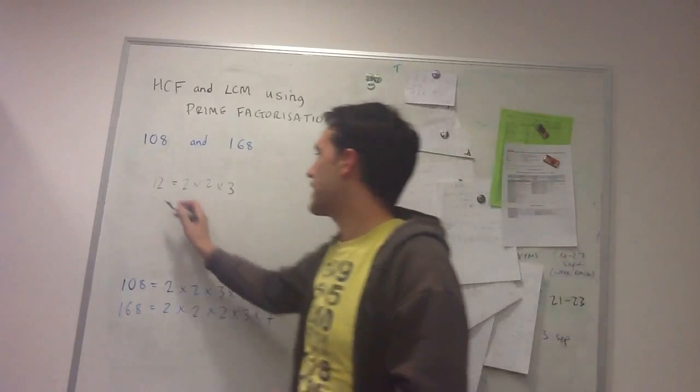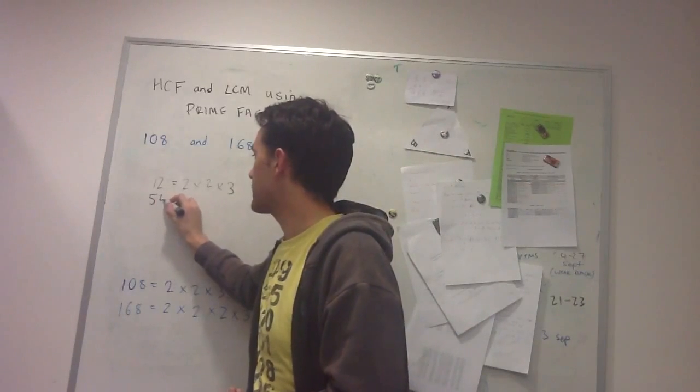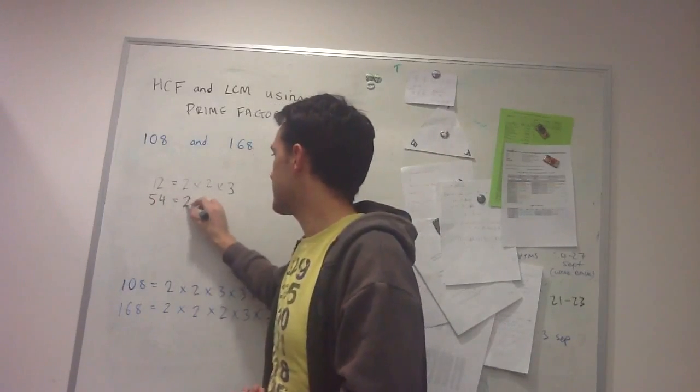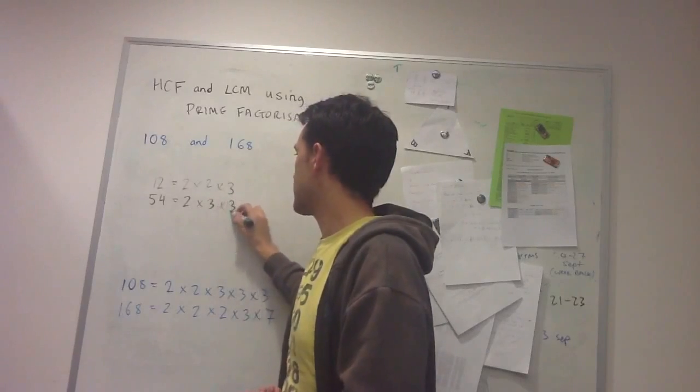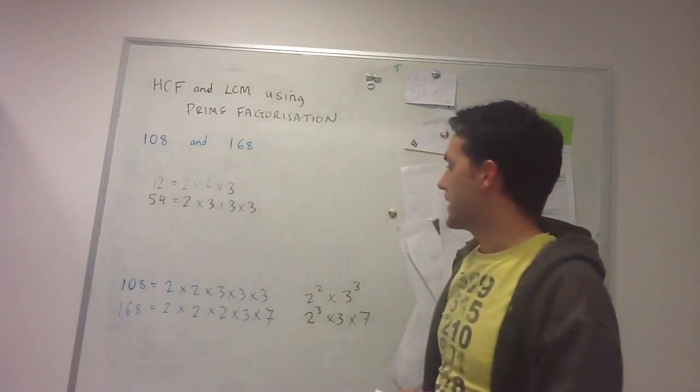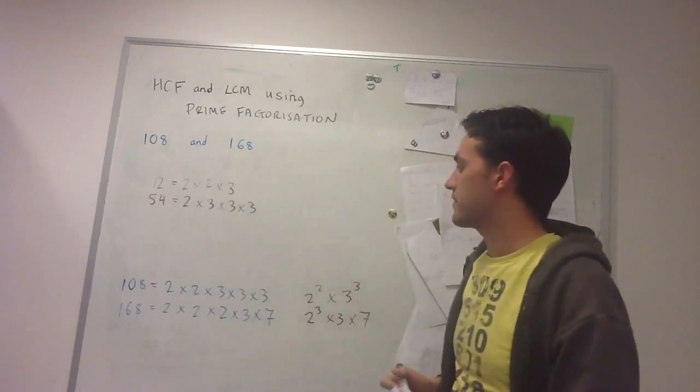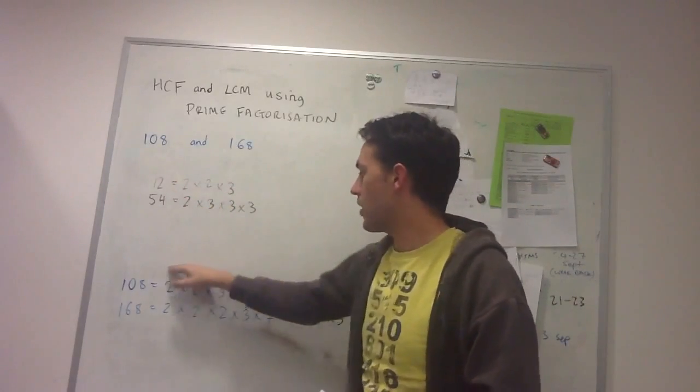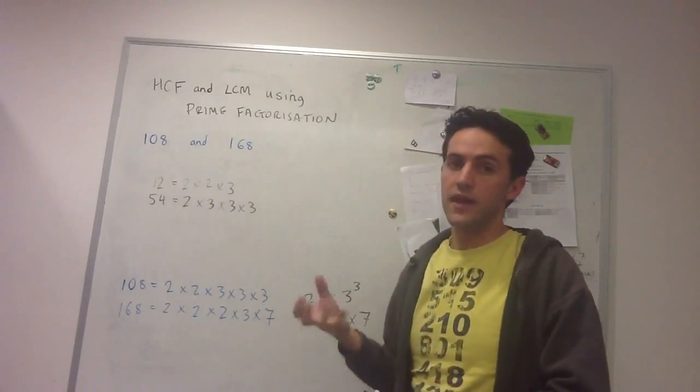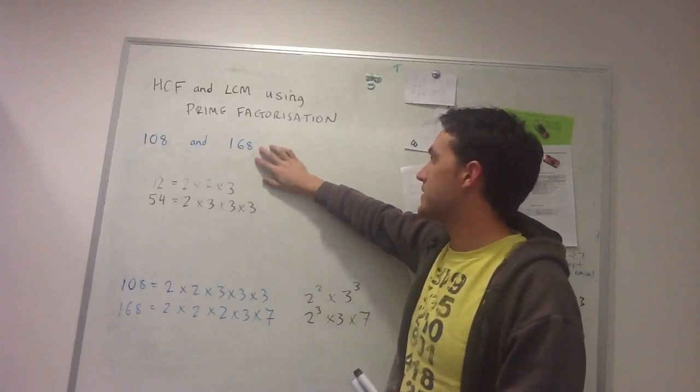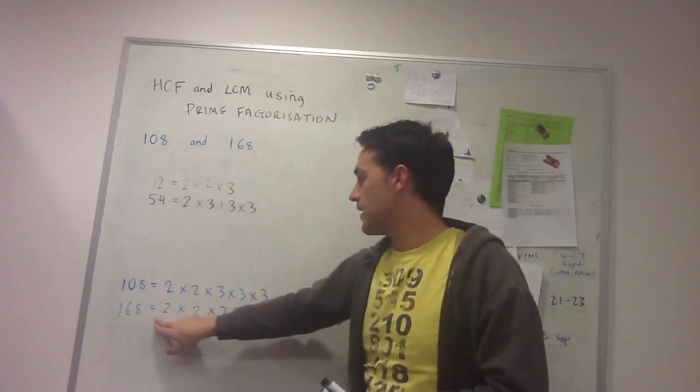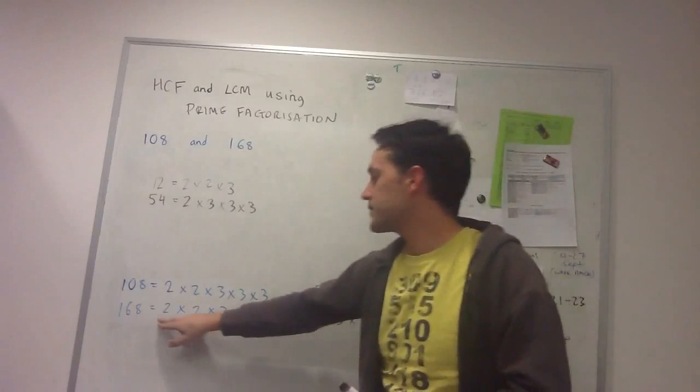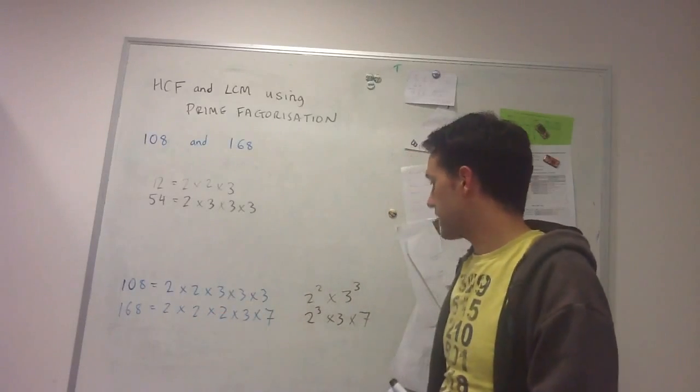Another factor of 108 is 54, and 54 is 2 times 3 times 3 times 3, so it uses one of the 2's and 3 of the 3's. So all of the factors of 108 are some combination of up to 2 two's and up to 3 three's, whereas all the factors of 168 are some combination of up to 3 two's, a 3, and a 7.